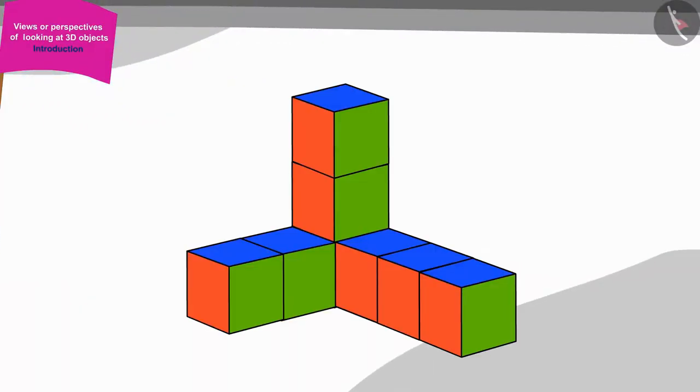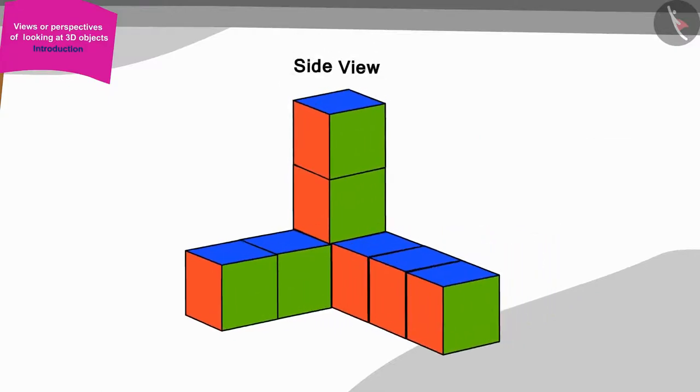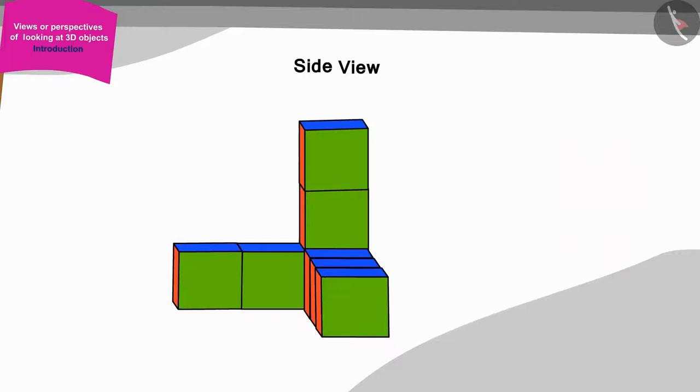First, Appu saw the shape made by Golu from the front view in this way and made this picture. Gaggoo saw the shape from the side view and made such a picture.